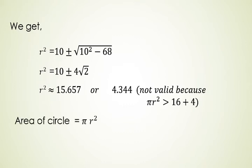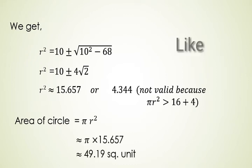So we get 15.657 as the value of R square. Now applying the formula of area of circle pi R square we get the area 49.19 square units and that is the solution.